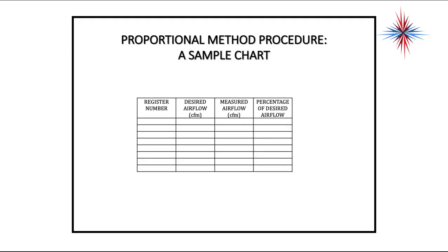Here's our basic chart. You have a register number, desired airflow, measured airflow, and percentage of desired airflow. When you record register numbers, try to do them in a way where you know where they are — even put a room name like Bath 1, Bath 2, Bed 1, Bed 2, Office 1, Office 45 — to make sure you can identify where each register is located.